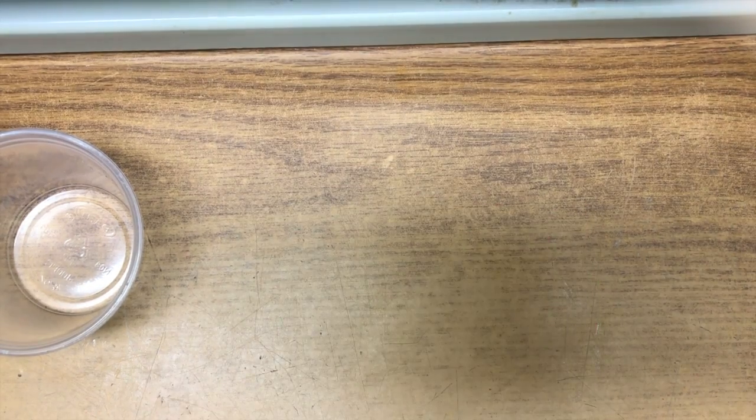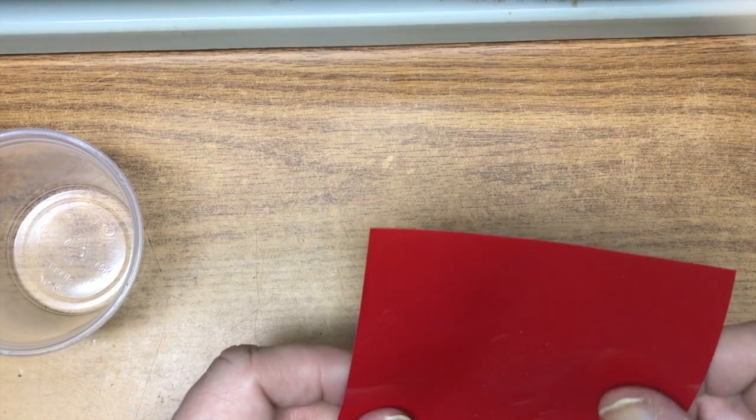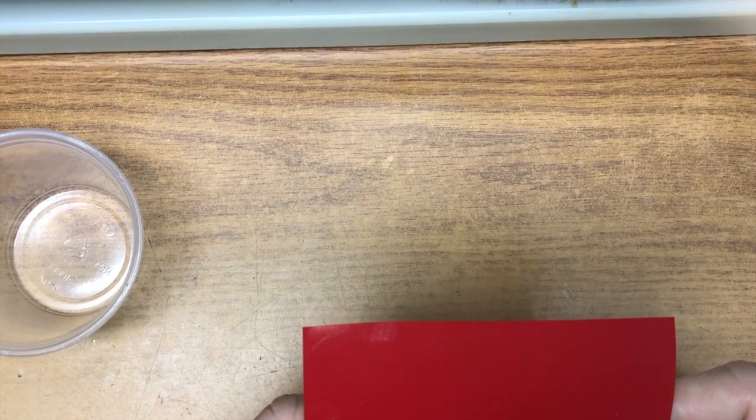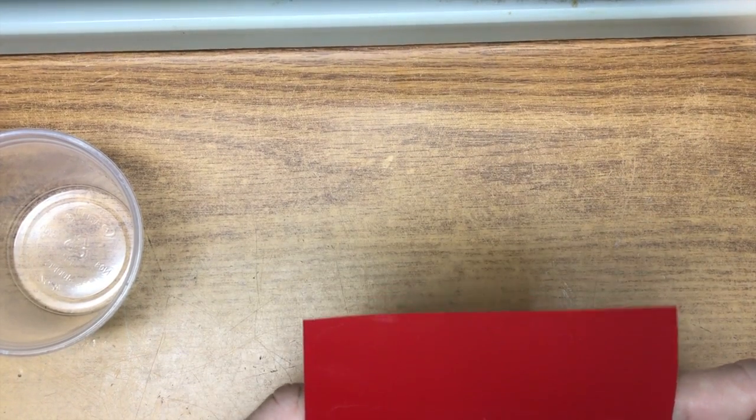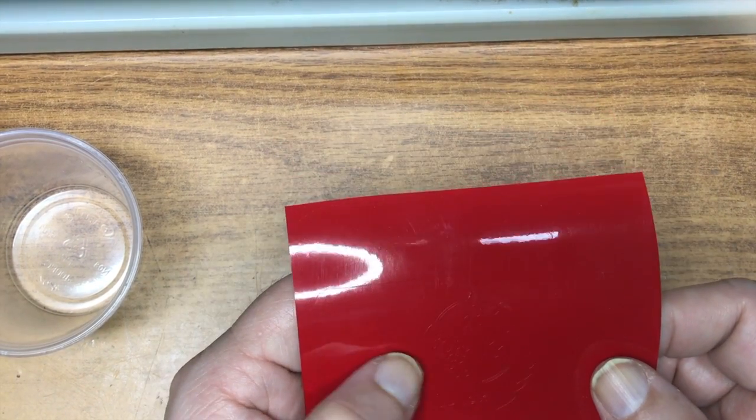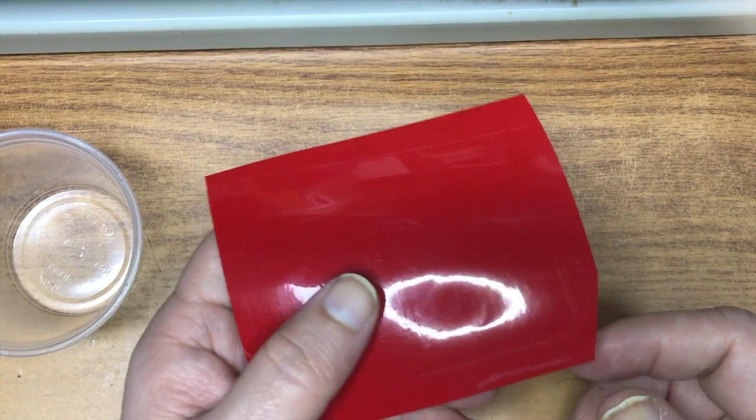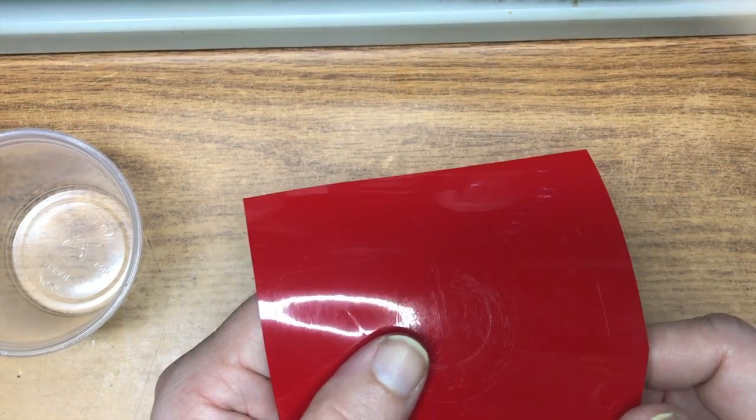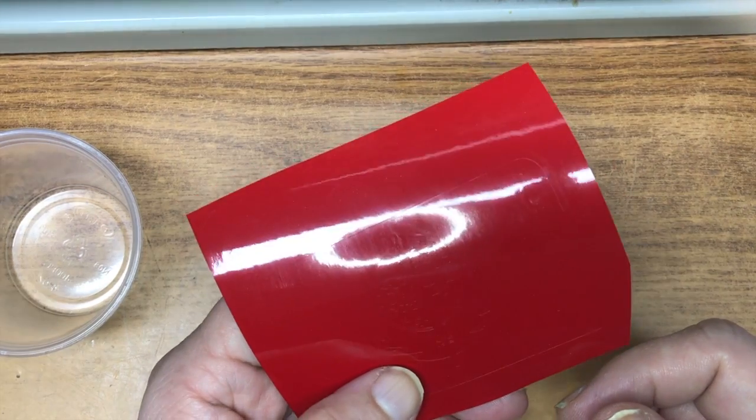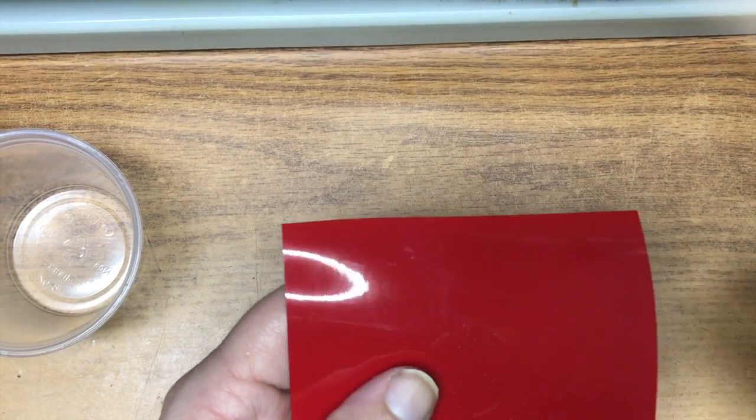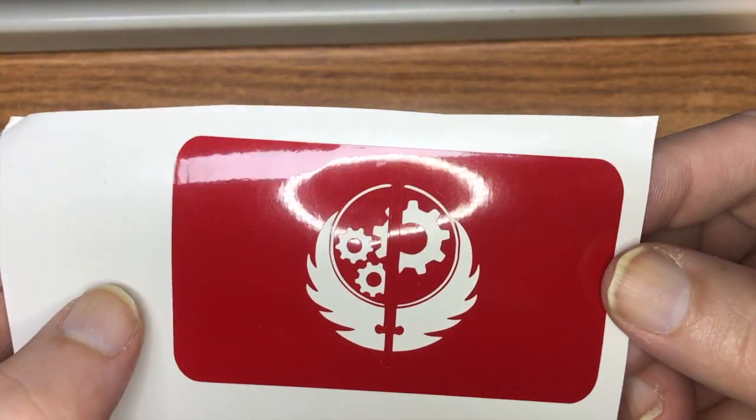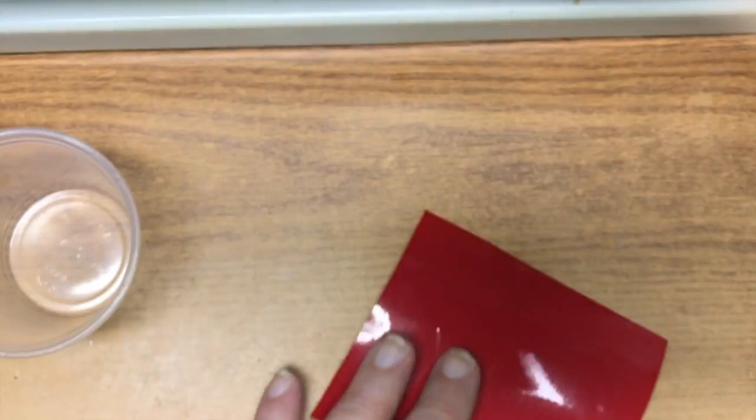So what you do is you get yourself a stencil, preferably something like vinyl, but you can cut it. I cut these on a Silhouette Cameo, which is a $200, $220 vinyl cutter, craft vinyl cutter. It makes really good stencils actually. You can see the details in this one. It's really good.